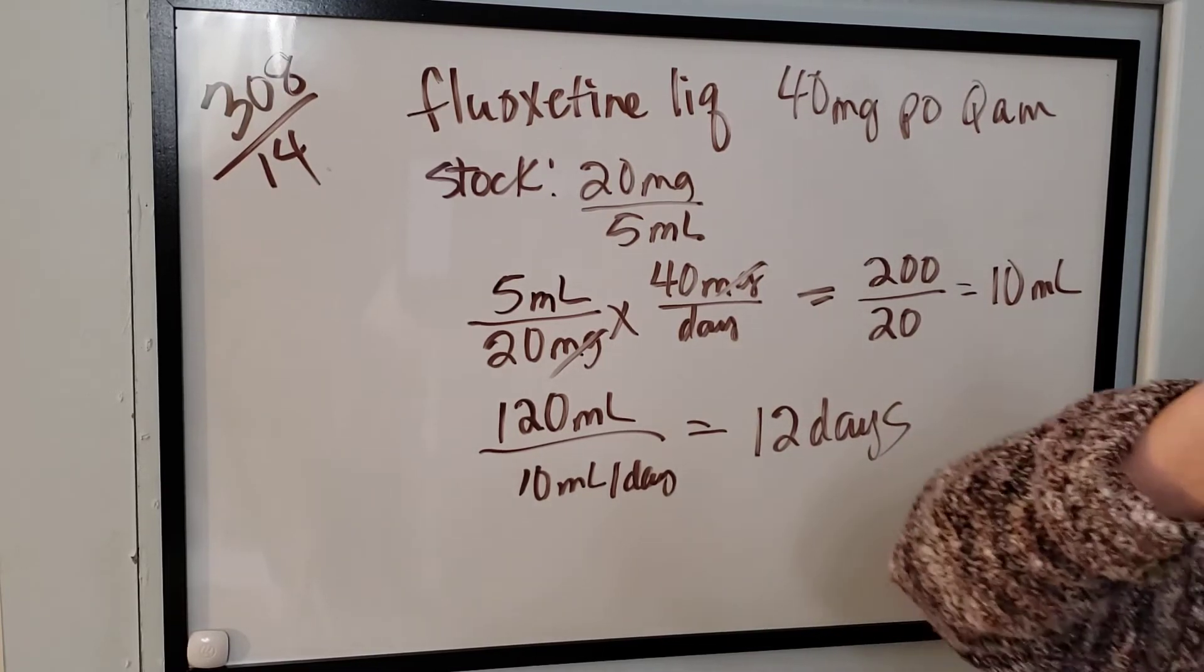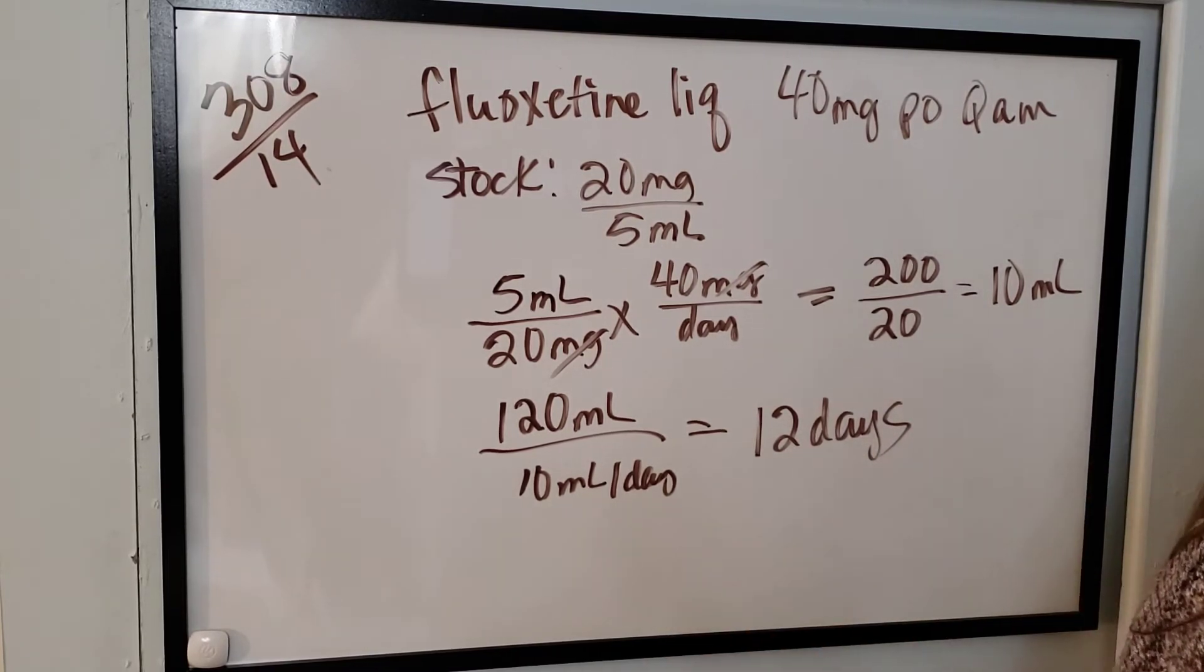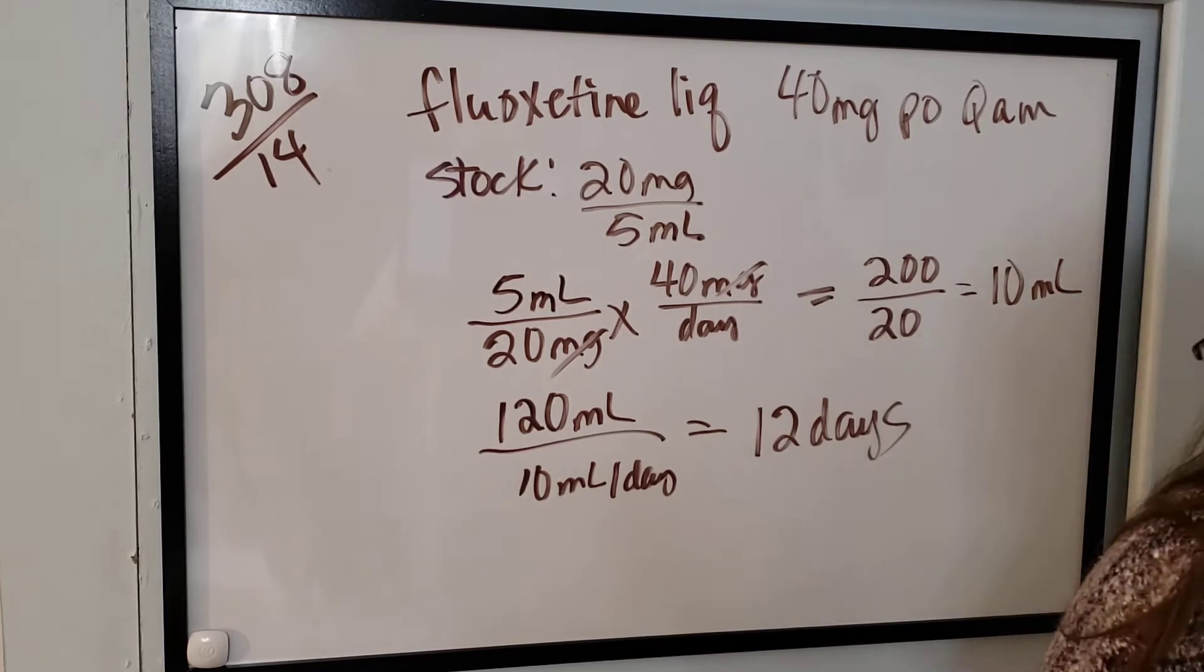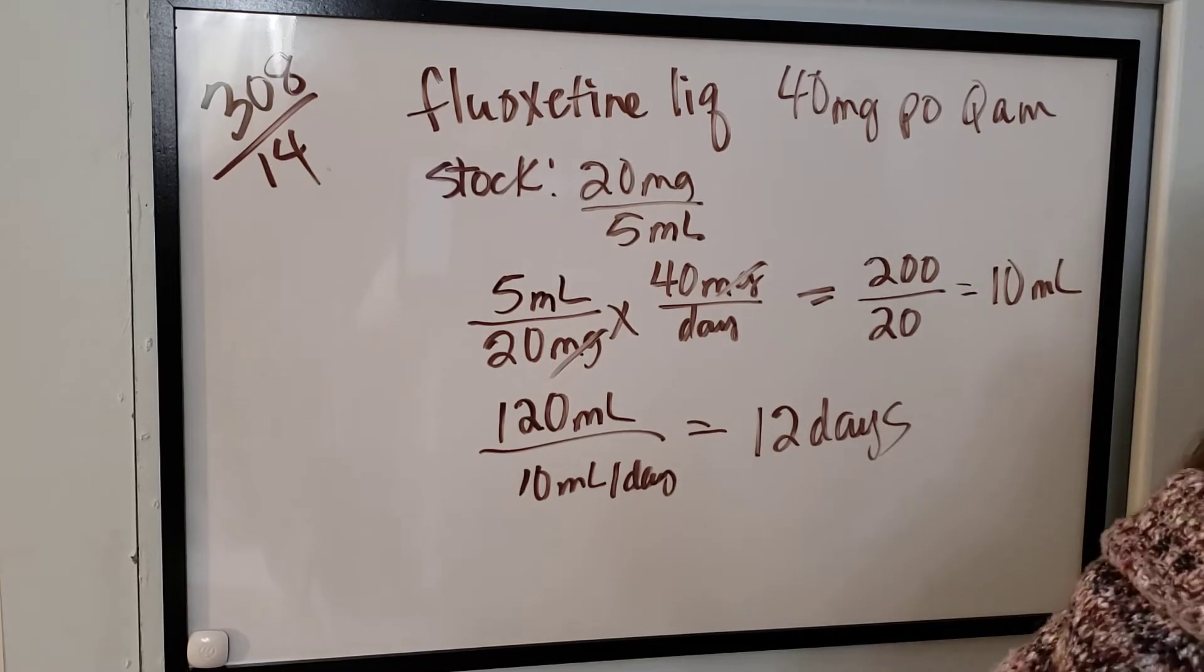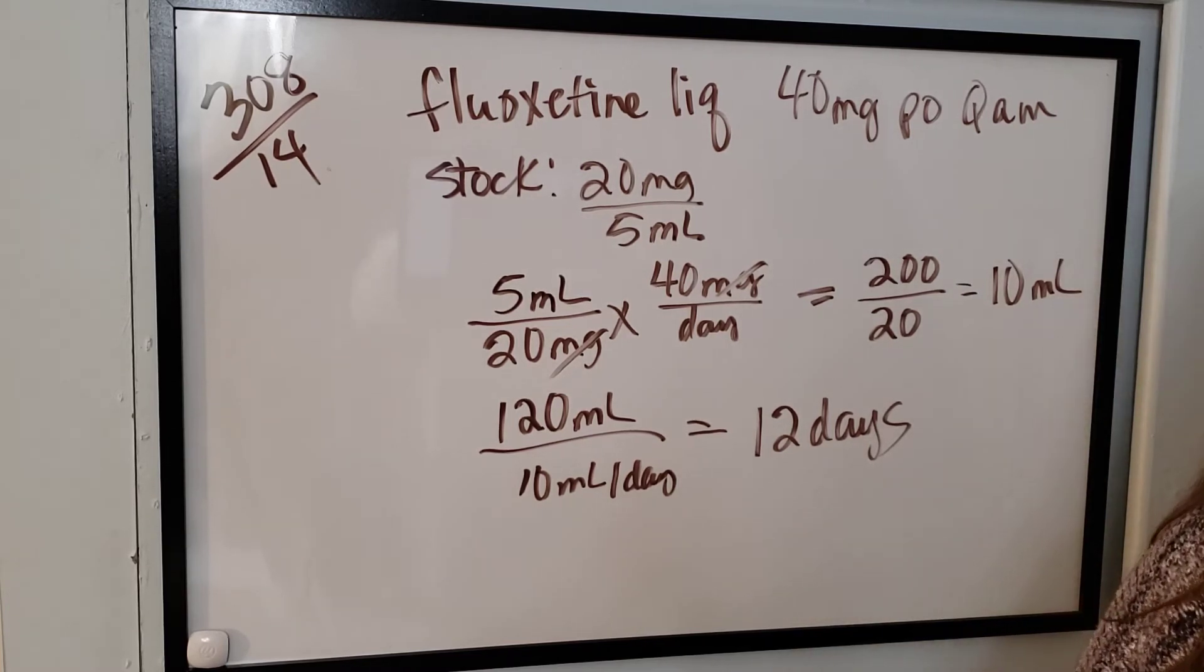Are we going to tell them to measure out 10 mL? We could, because this is probably an adult; this dosage is an adult dosage. We could give them something that measures 10 mL, but if they didn't have that, how would we tell them in household measurements?